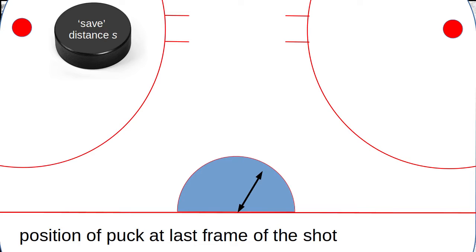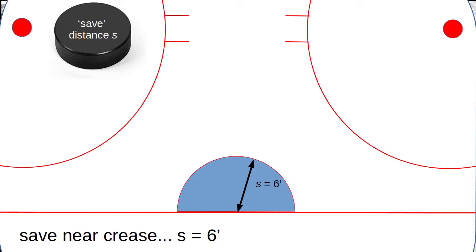Note that the position of the puck on the final frame of the shot is not actually on the center of the goal line — instead it will be somewhere in the crease wherever the goalie makes the save. We're going to need an independent guess or estimate of this final puck position; I'm going to call that the save distance. For example, if the goalie saved the puck right on the edge of the crease, the save distance would be the radius of the crease — six feet.